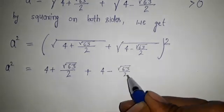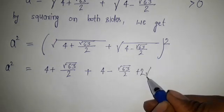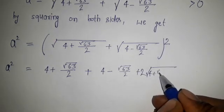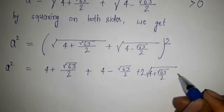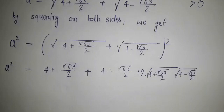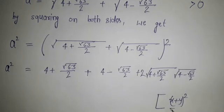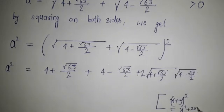And then 2ab. Instead of this, we have 4 plus square root of 63 divided by 2, and we have 4 minus square root of 63 divided by 2, because we are knowing this identity: (x + y)² equals x² plus 2xy plus y².